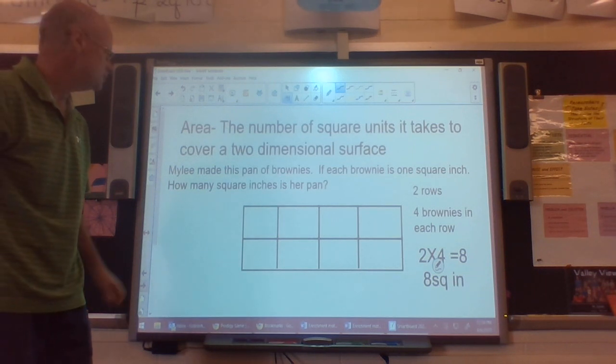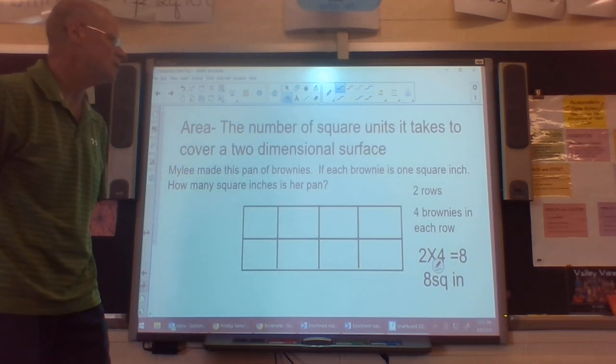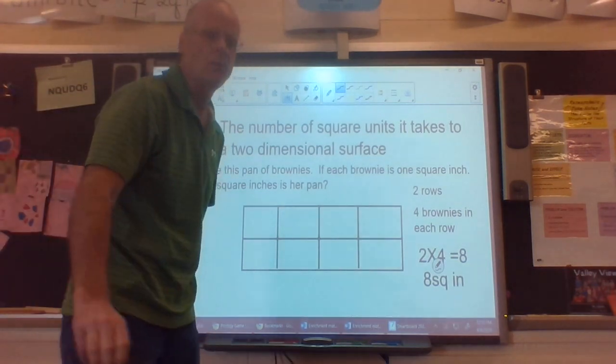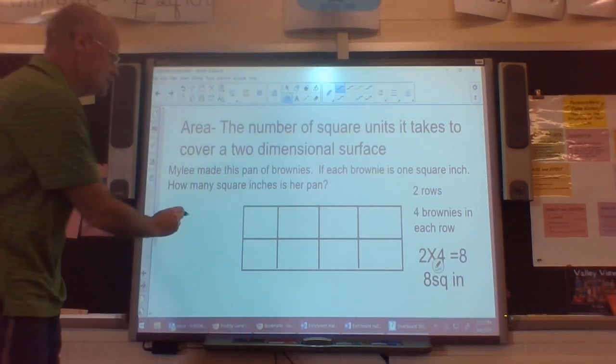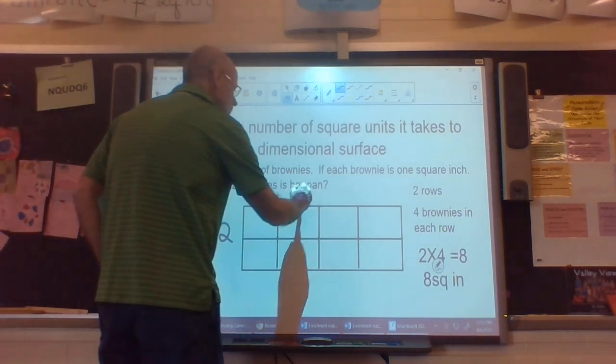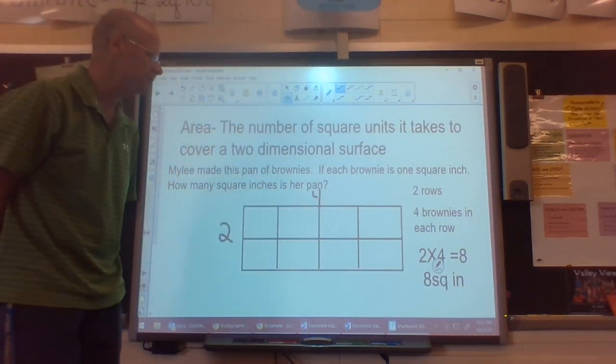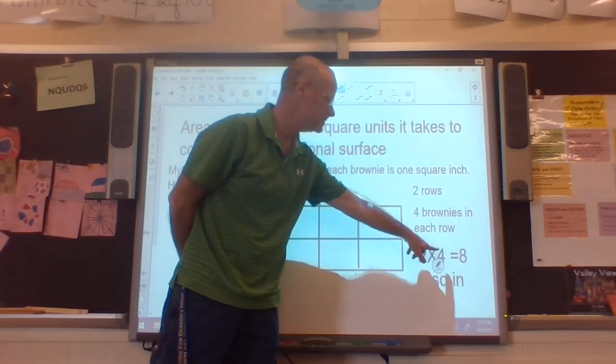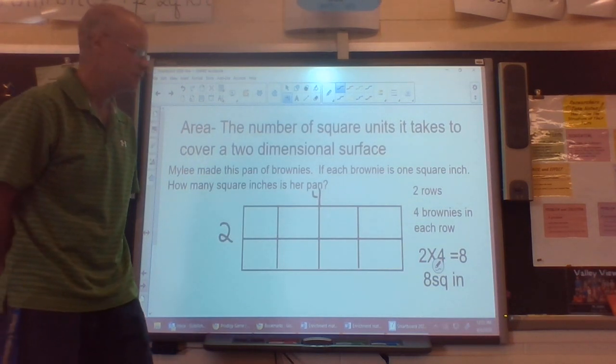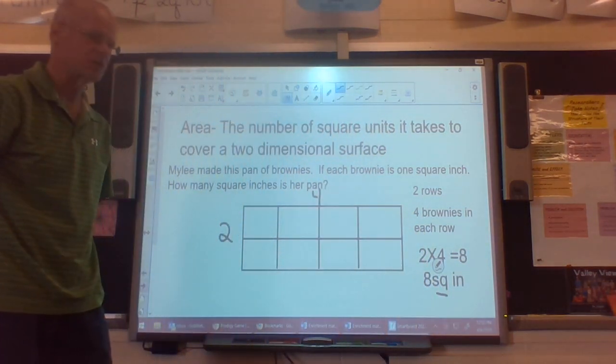I put a little word problem for you. Miley will like this one. Miley made this pan of brownies. If each brownie is one square inch, how many square inches is her pan? I said it looks like she has two rows of brownies going this way and four going this way. To find the area, I would have to do two times four. Two times four is eight, and my units for area are always going to be squares. In this case, I have eight square inches.